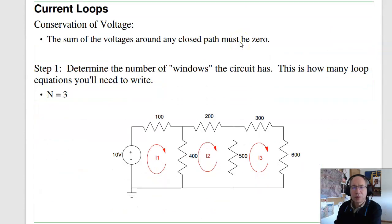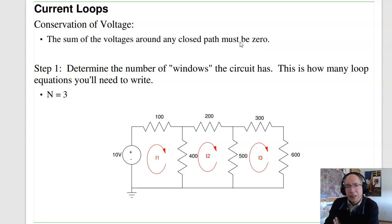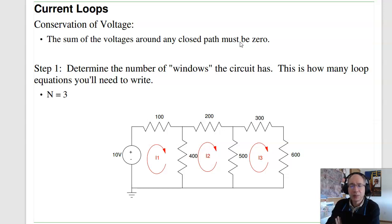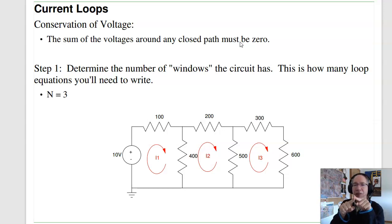For current loops, one technique to analyze a circuit is to use n equations and n unknowns. In Math 129 linear algebra, you learned how to solve n equations and unknowns — that's the trick we use over and over. If I can convert a problem to n equations and unknowns, I can solve. With current loops, the idea is conservation of voltage: if I sum the voltages around any closed path and wind up back where I started, I get zero.